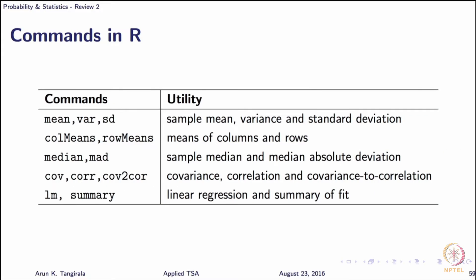Let me conclude this discussion on partial correlation with just a quick summary of the commands, relevant commands in R that will allow you to compute sample versions, that means estimates. As you know, mean, var and sd, they all give you estimates of the mean, variance and standard deviation. When you have many variables and you assemble them in a matrix, then you can use col means or row means depending on how you arrange your data.